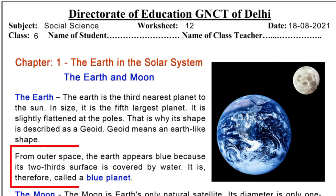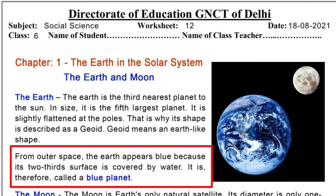Geoid means earth-like shape. From outer space, the Earth appears blue because two-thirds of its surface is covered by water. It is therefore called the Blue Planet.